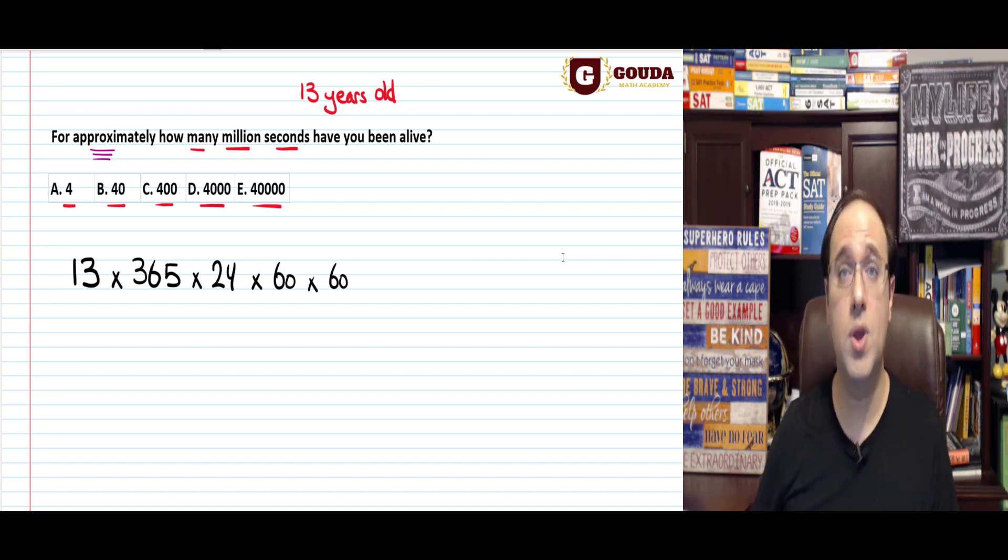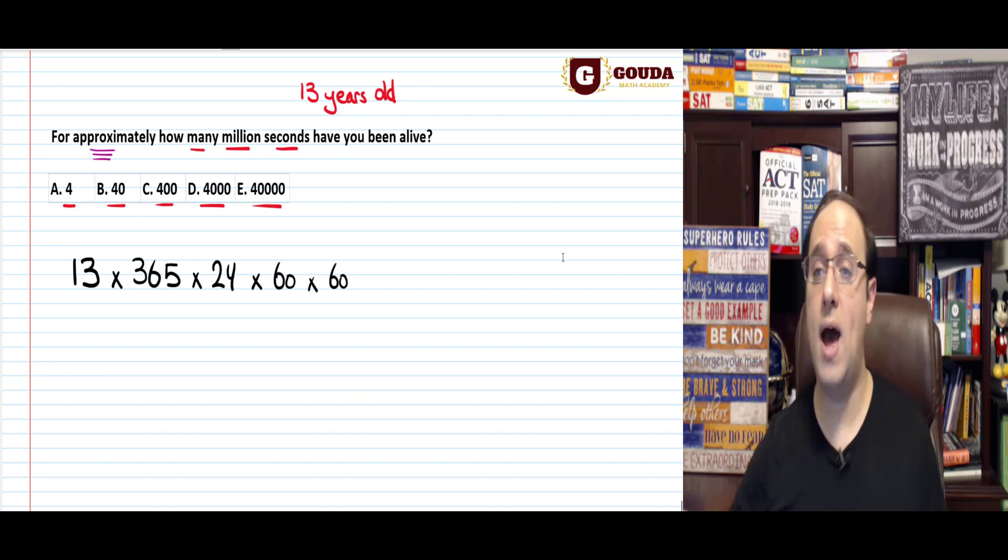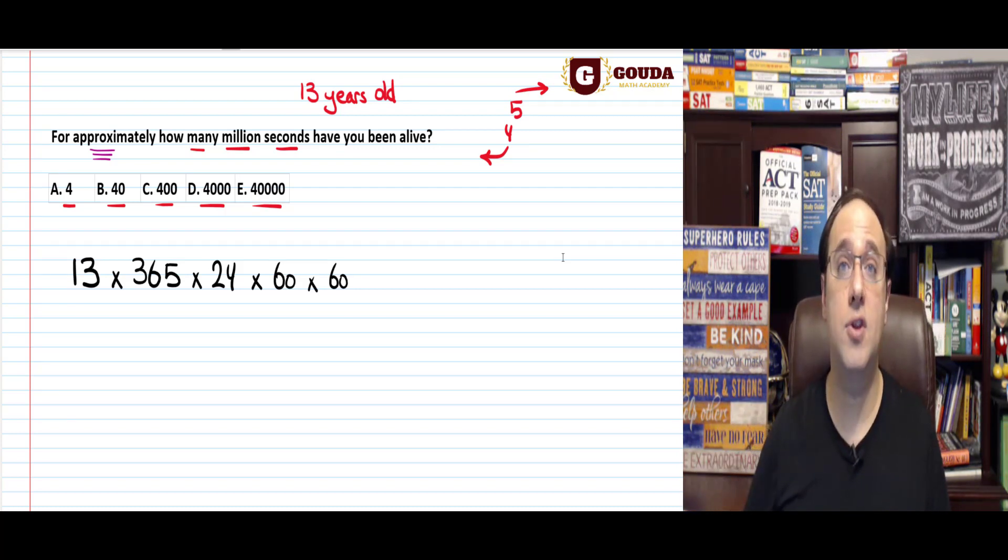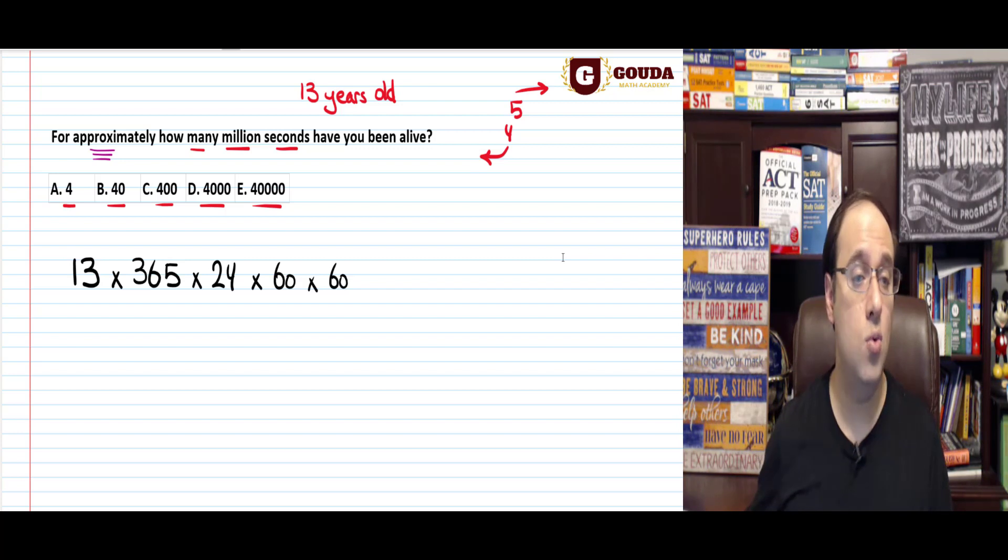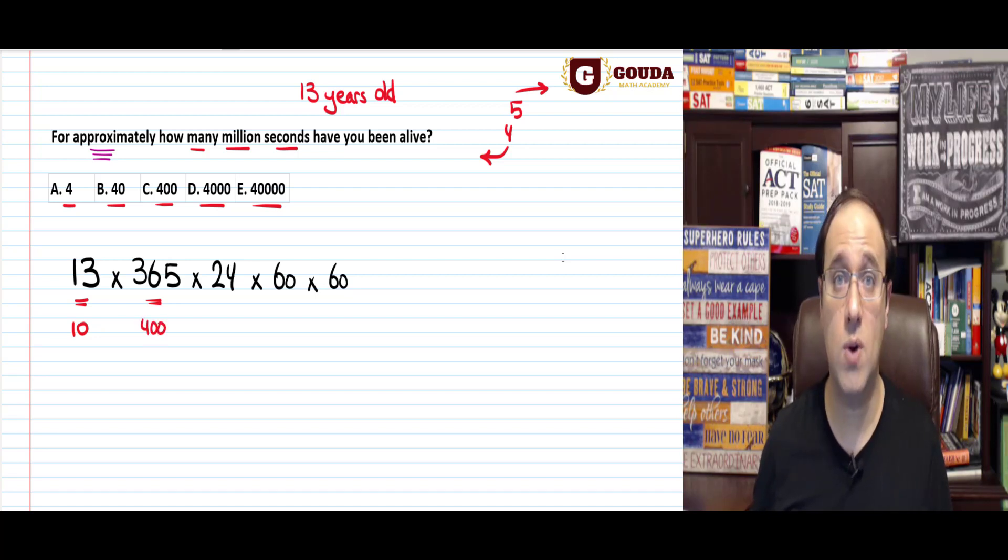Then multiply my approximations by each other. And here comes a very important note. How can I make sure that my answer is as accurate as possible? Forget about what you learned in school when we said that you need to round anything that's five or more up, round anything that's four or less down. Forget about that. That's easy. That's not the trick here. And so you understand what I mean, if we were to do this like we would in school, just using the five rule, we would say that 13 rounds down to 10.